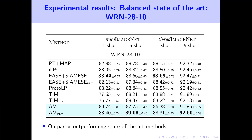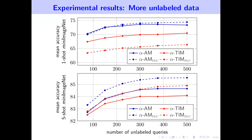Additionally, our method outperforms or performs on par with several state-of-the-art methods in the balanced transductive few-shot learning setting. We also show that our method can significantly outperform ALPHA in the presence of more unlabeled data, verifying our hypothesis that using manifold similarity to calculate class centroids is superior to using Euclidean distance.